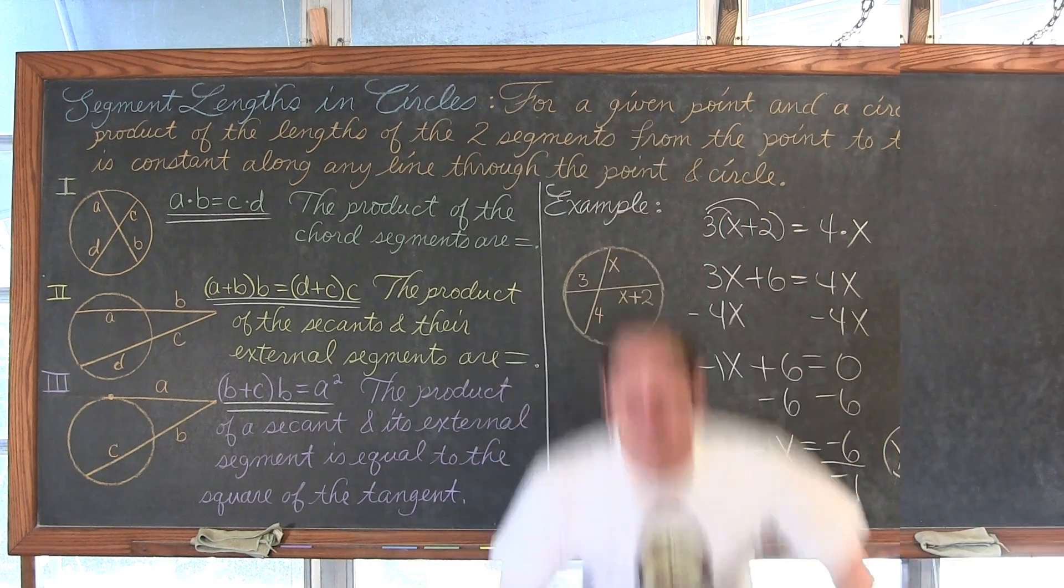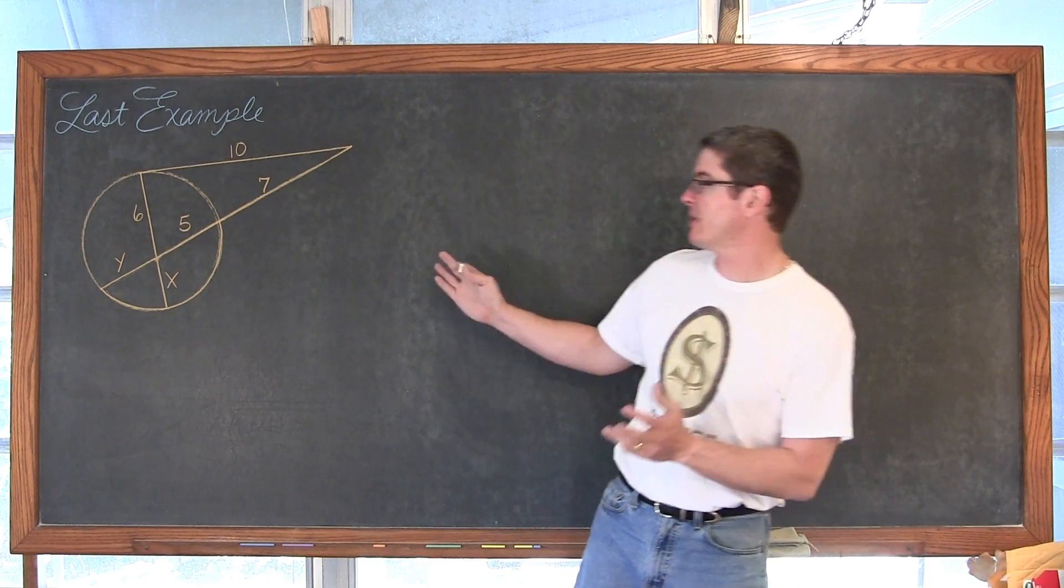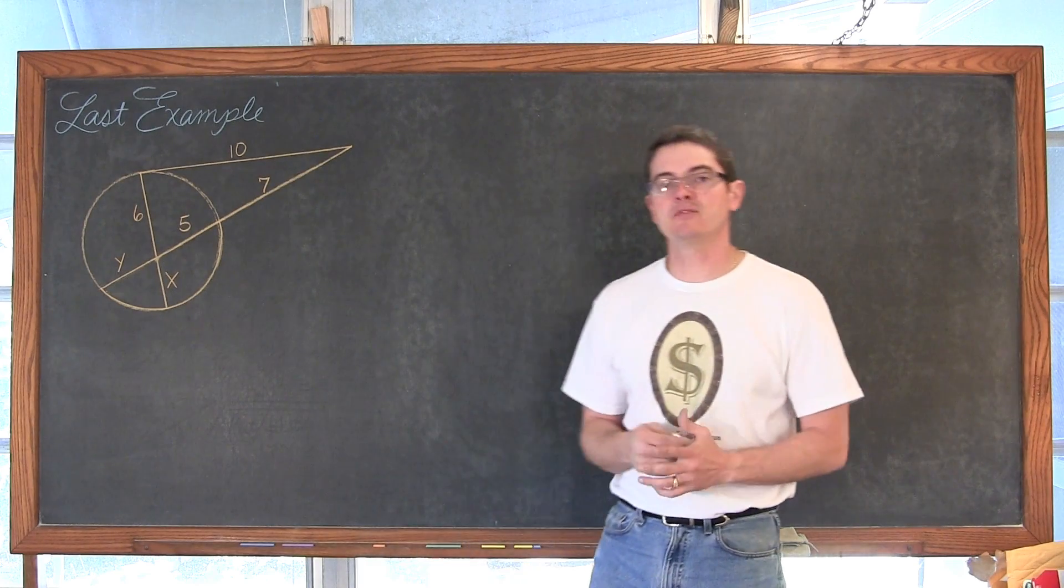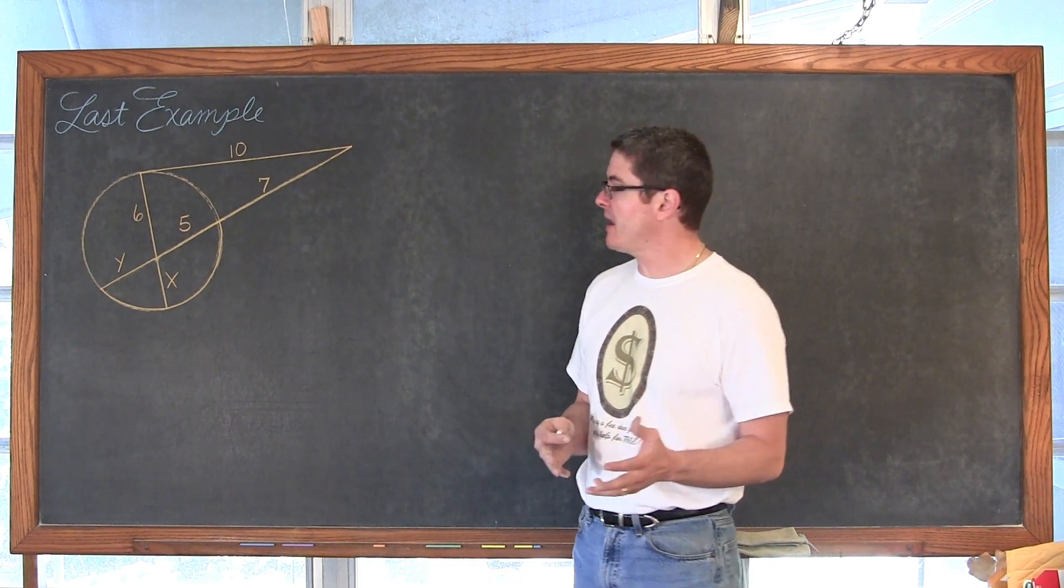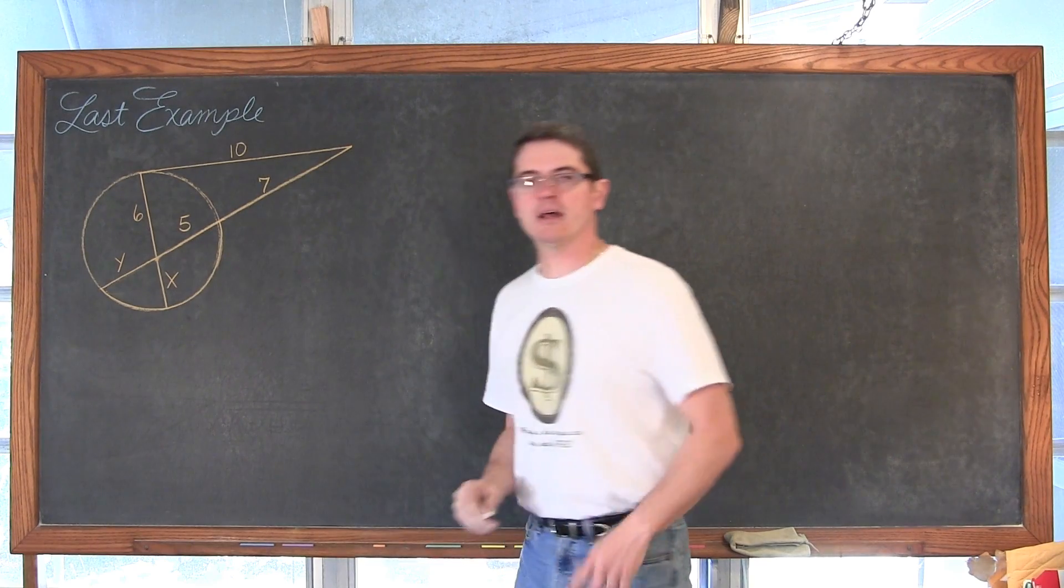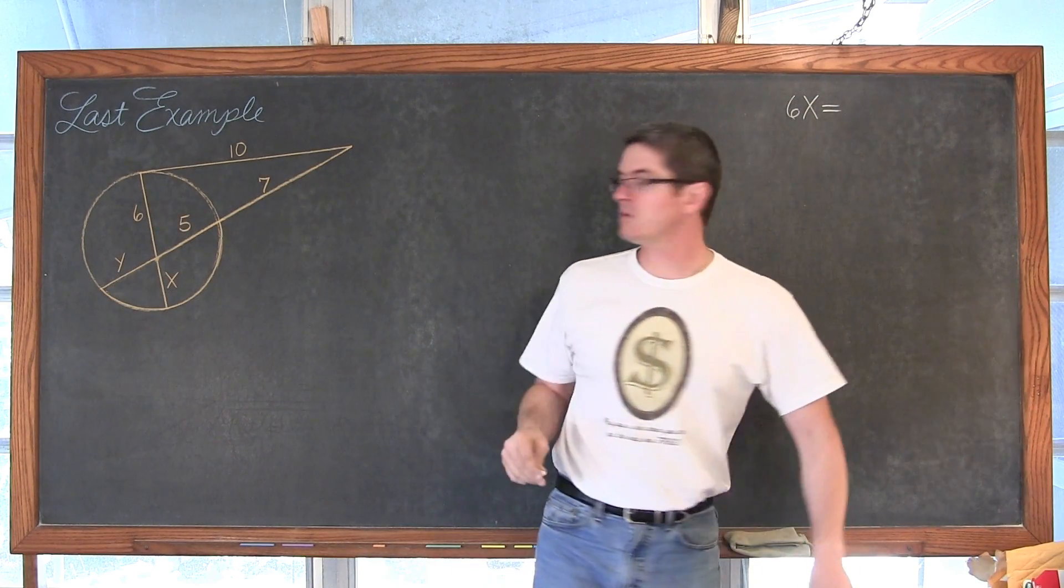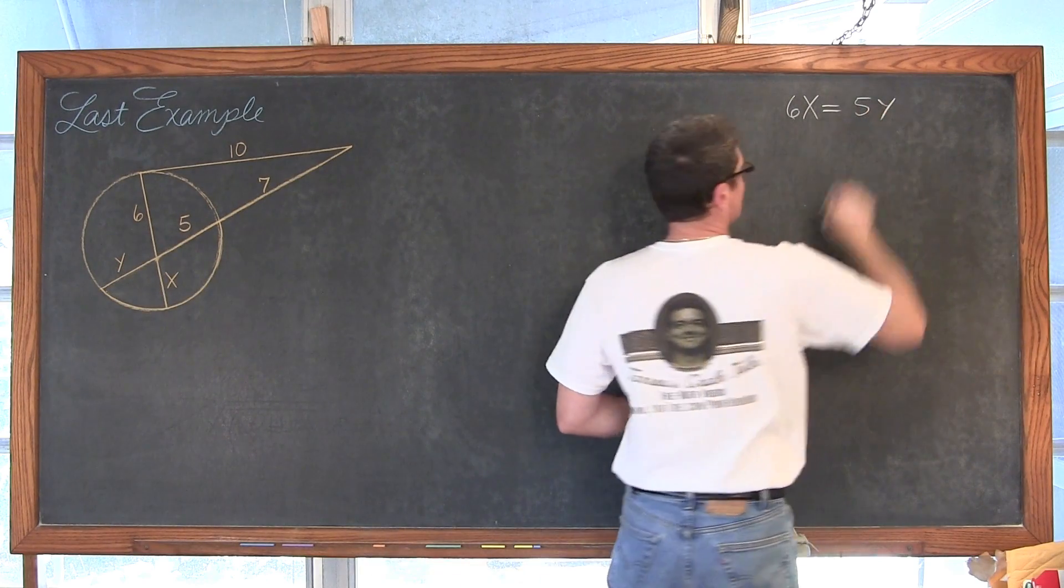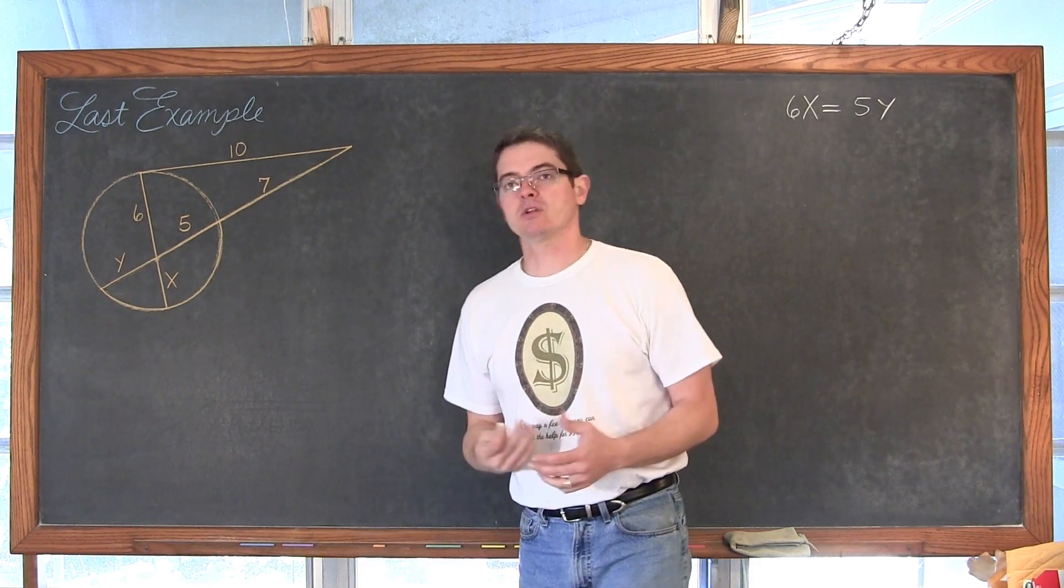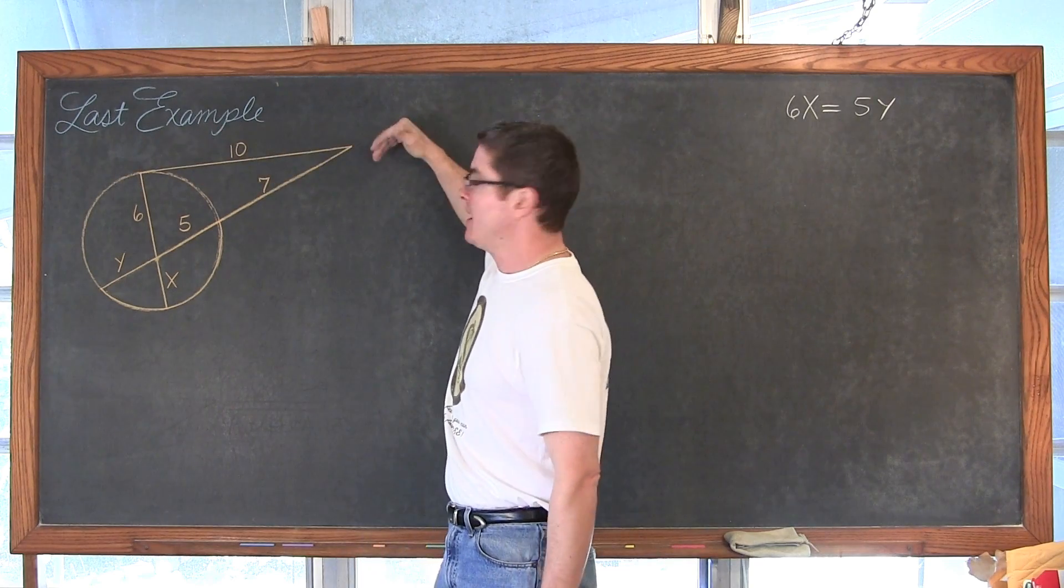Last example! In our last example, this is going to be a two-part example. Now, how do I know that? Because as I look in my diagram, I have two variables, and you can't solve for two variables at the same time usually, unless you have two equations. So I can look at this and I know that 6 times x is equal to 5 times y. Well, that's a true statement, but that's not immediately going to allow me to find either x or y, so I need to look at any other information in this problem. And that is going to be with using this intersection point that's outside the circle, the intersection of our tangent and our secant.